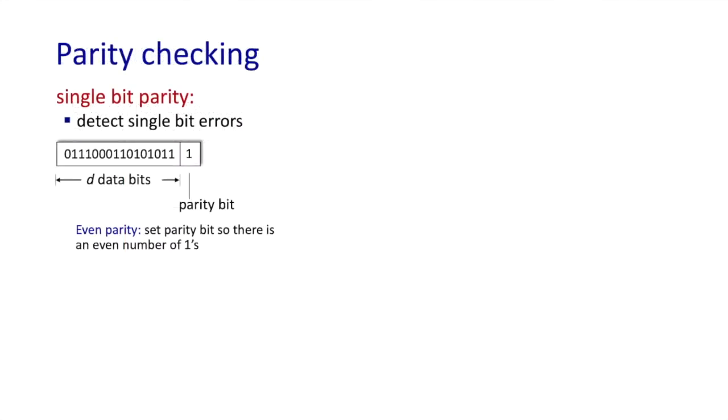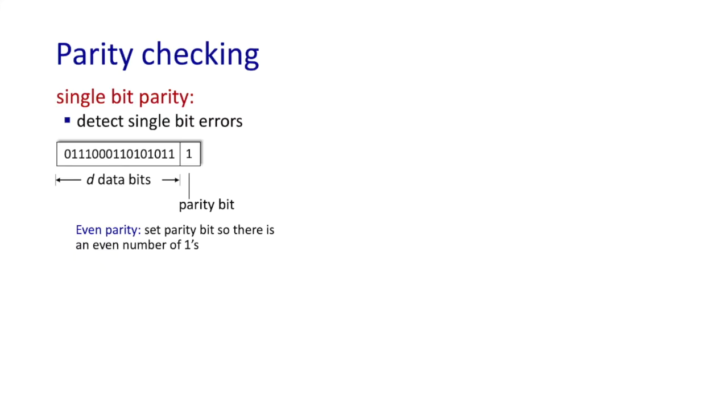Perhaps the simplest case of error detection and correction that we can think of is simple parity checking, where a single parity bit is set to zero or one so that the total number of bits among the original d bits and this additional parity bit is even in the case of even parity. In this example here, there's an odd number of parity bits in the first d bits, so the parity bit is set to one so that now there's an even number of one bits among the d plus one bits. At the receiver side, the check is simple. The receiver simply determines whether or not there's an even number of one valued bits in the received data, including the parity bit.